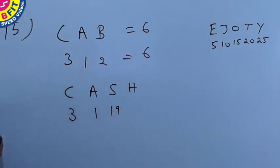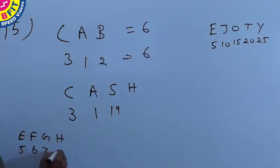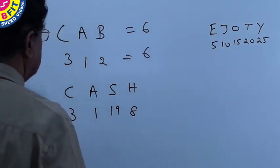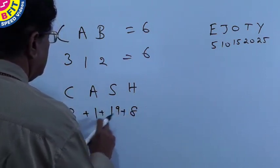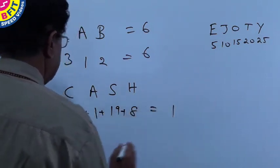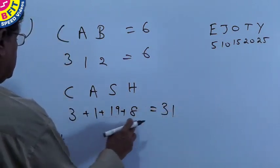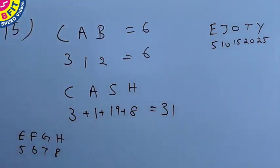H: E is 5, F=6, G=7, H=8. So H is 8. Now if you add: C=3, A=1, S=19, H=8, the total is 31.